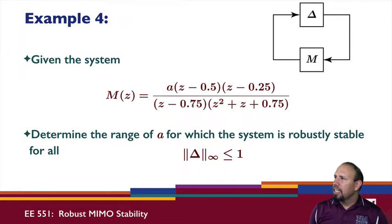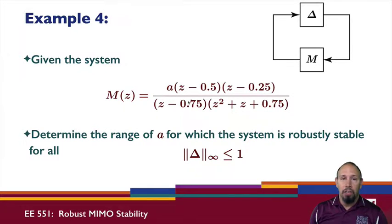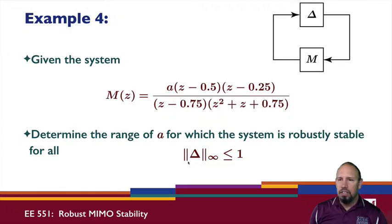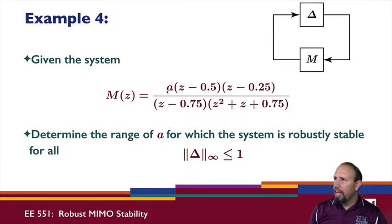Example four is in discrete time. If no sampling time is given, you can supply one such as T = 1 or T = 0.1; the sampling time affects the time response but not stability. There is an uncertain value 'a' in the system, and we want to determine the range of 'a' for which the system is robustly stable for all uncertainties. We need the H-infinity norm of the system, but 'a' is included in the expression.